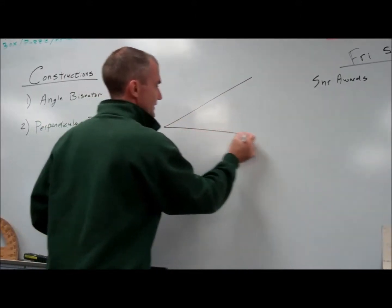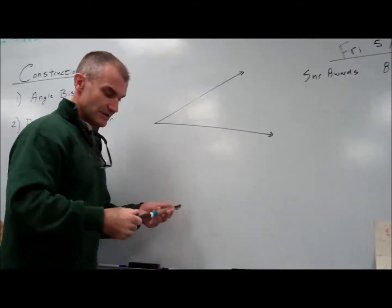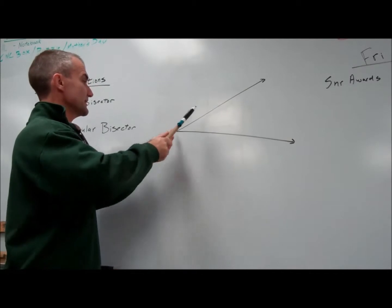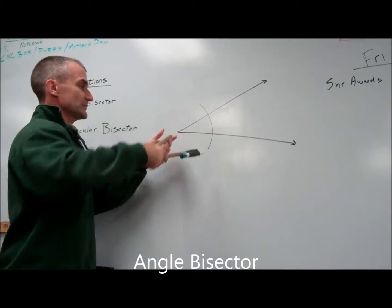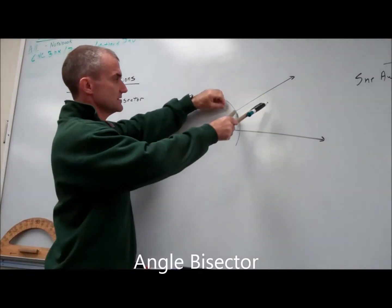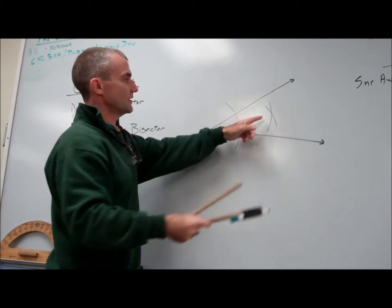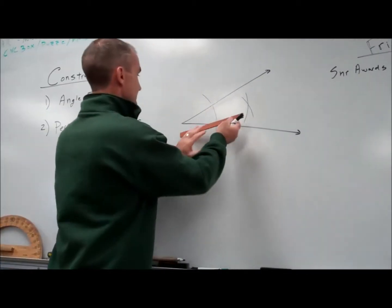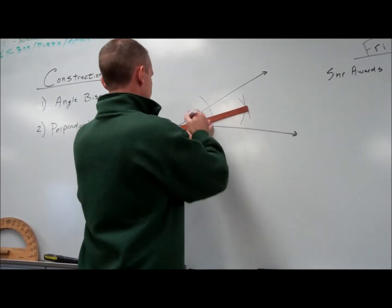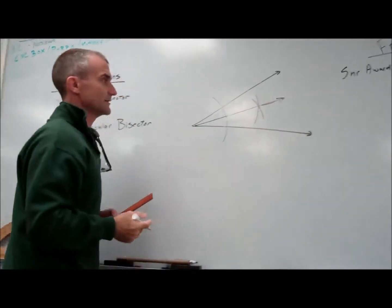If you have a given angle and you want to bisect it with a construction, all you need to do is take your compass and draw an arc across that angle. Those are points equidistant from a vertex. From these points of intersection, you draw a couple more arcs. Where they intersect are all points equidistant from both sides - connect those points, and there's an angle bisector.